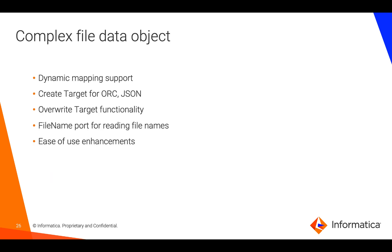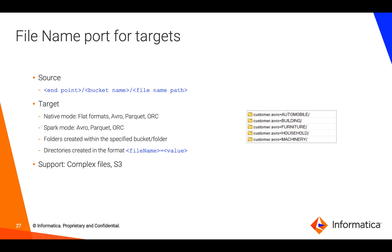The complex file data object has seen several enhancements including dynamic mapping support, create target support for additional file formats, support for file name ports for both reading and writing use cases, and wildcard character support. You can now build a file name for your complex file targets mid-stream as part of your mapping — this lets you reorganize your target data structures dynamically. You can provide key-value pairs for the file name and BDM will create subdirectories in the target structure and reorganize the data based on your mapping logic.